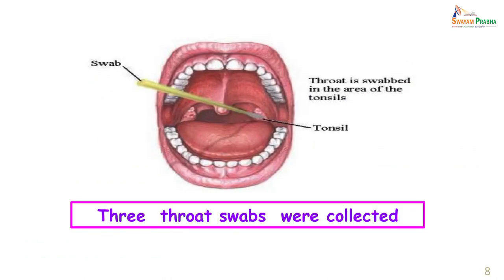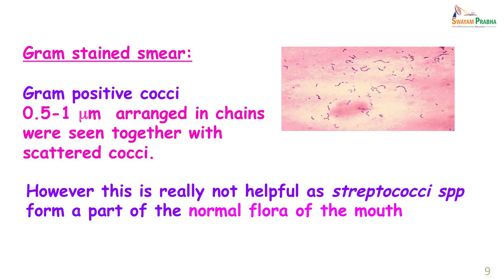When she was asked to open her mouth, her tonsils were enlarged and showed the presence of greyish-white exudate on the surface. Three throat swabs were collected. One was subjected to a gram stain, which showed gram-positive cocci about 0.5 to 1 micrometer arranged in chains as well as some other scattered cocci. However, this was not really helpful for the diagnosis of a group A streptococcal infection because streptococci form part of the normal oral flora.